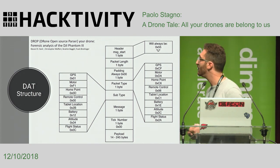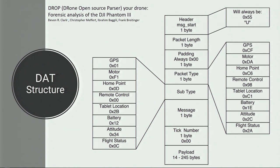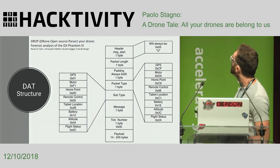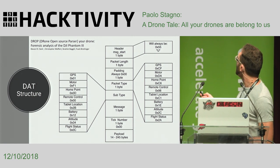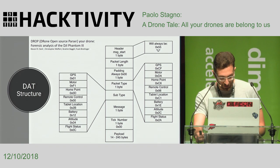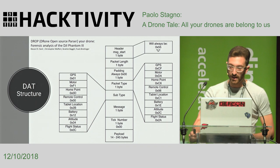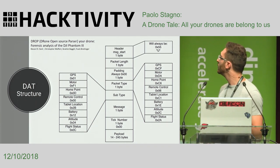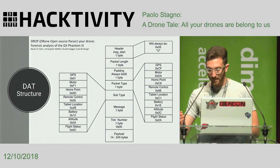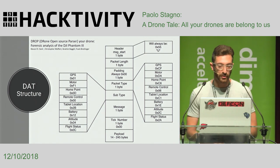Speaking about the .dat files on the black box — they are proprietary DJI files. The file structure closely resembles the SDK packet structure: the first byte is a magic number, always 0x55 hexadecimal, followed by indicators of who is speaking, the sensor, and other information. I didn't spend much time analyzing the file format because there is already an available open source tool called DOSP — Drone Open Source Parser — which can parse the .dat files and retrieve them in a more easily readable format.